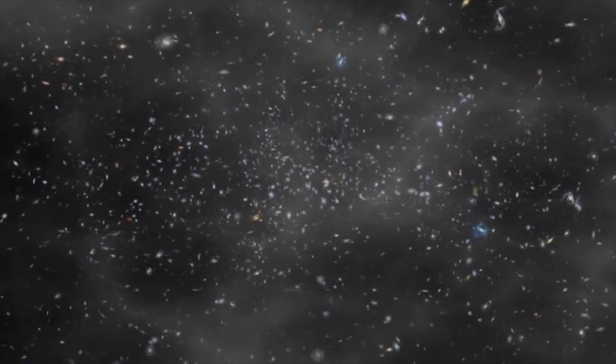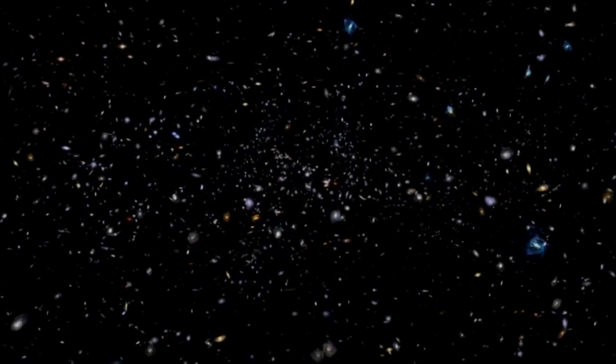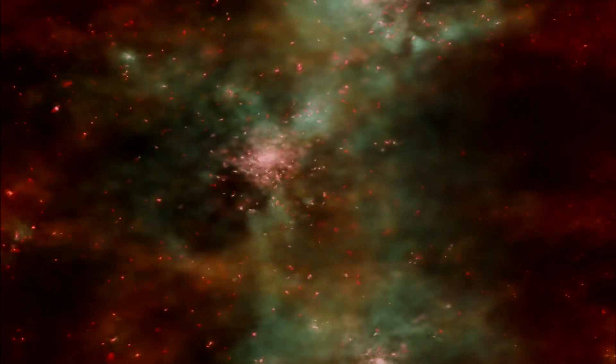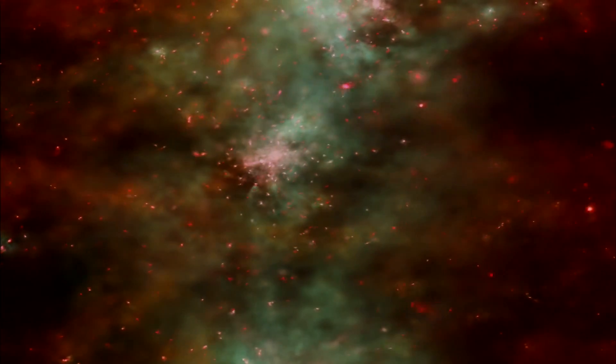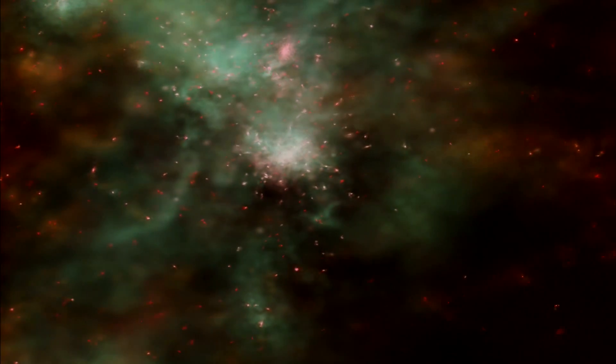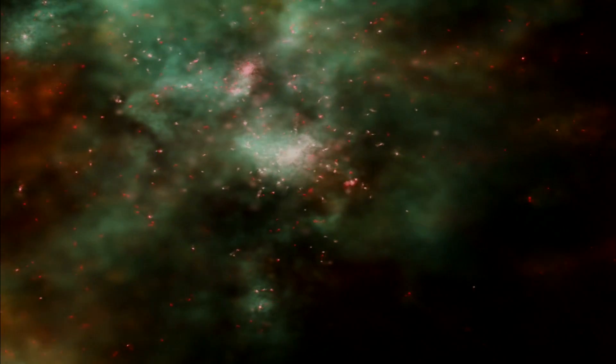It all started 14 billion years ago with an event called the Big Bang. The Big Bang theory suggests that all matter in the universe was contained in a single point. After the initial expansion, the universe cooled enough to allow the formation of subatomic particles, including protons, neutrons, and electrons. The result was a universe consisting of gas only — about 70% hydrogen and the rest helium.